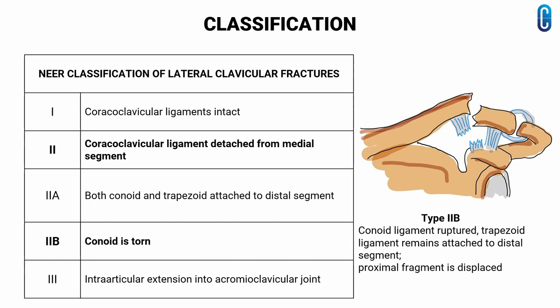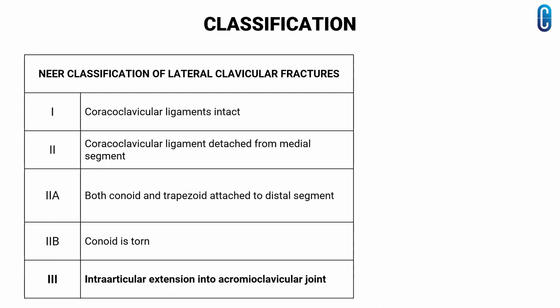So the proximal fragment will be displaced. In type 3, there is intra-articular extension into the acromioclavicular joint.